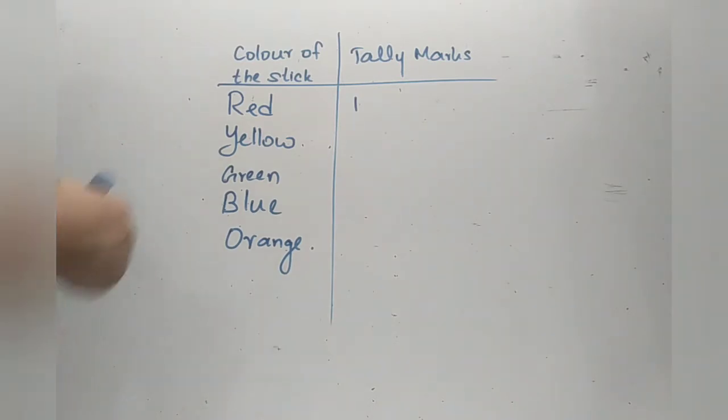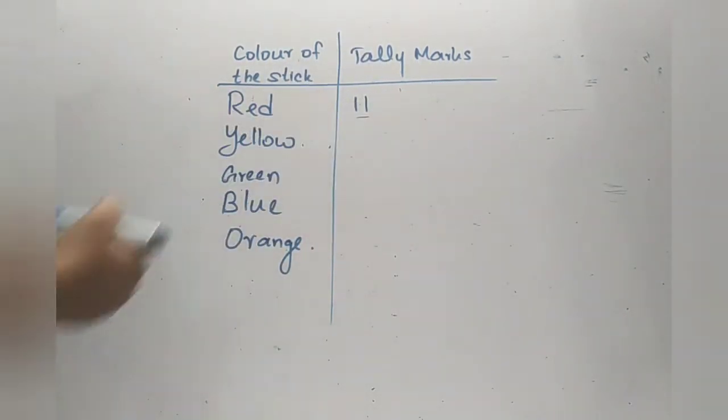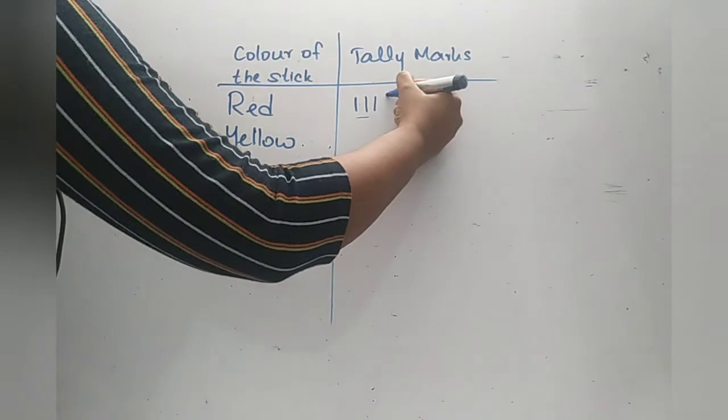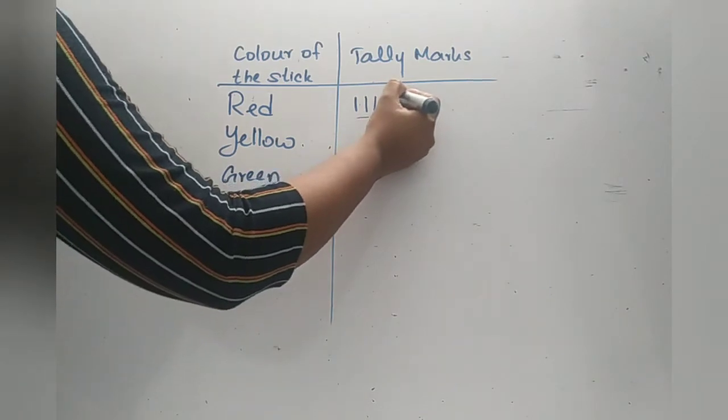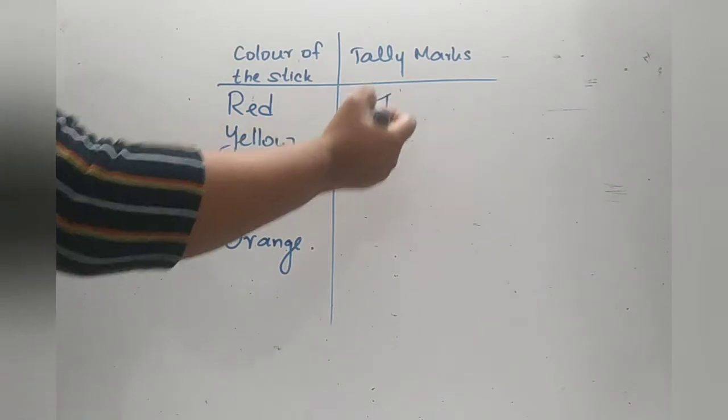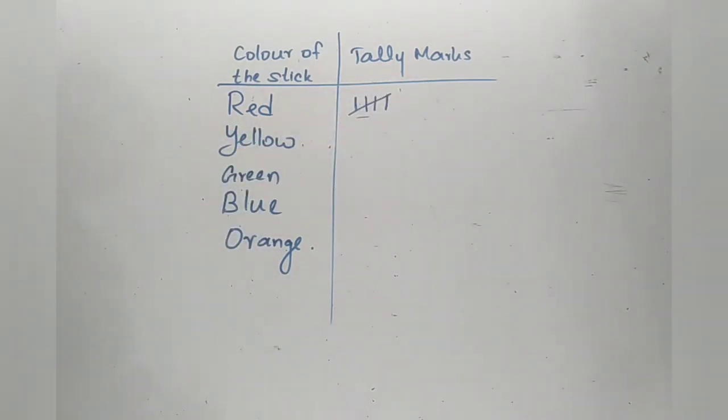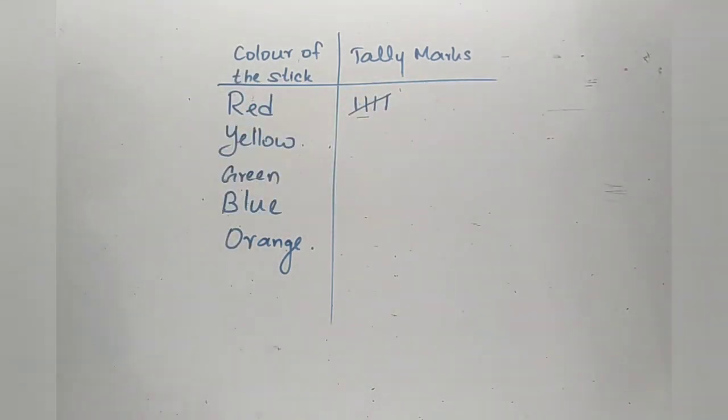Tally marks is actually what? When you take each stick out from this bag, you have to put a line like this. Now this represents 2 sticks has been taken. Likewise, when you move on, we use to mark the 5th one by cutting across the 4 lines. So this one set denotes that there have been 5 sticks taken out from the bag. Do you understand? 1, 2, 3, 4 and the 5th is cut across those 4 lines.